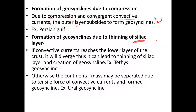The fourth type is formation of geosynclines due to thinning of the sialic layer. When convective currents reach the lower layer of the crust they diverge, causing thinning of the sialic layer and subsequently the formation of geosynclines. Alternatively, the continental mass may be separated due to tensile forces of convective currents, which can also lead to the formation of geosynclines.